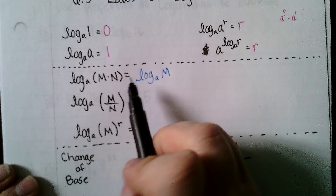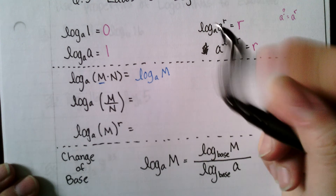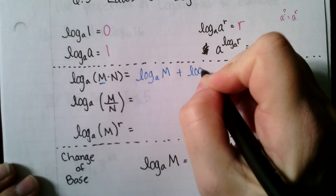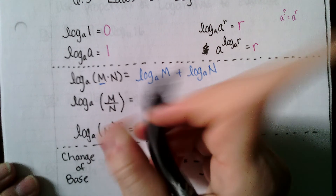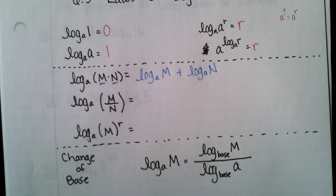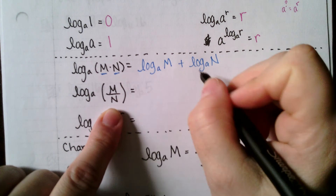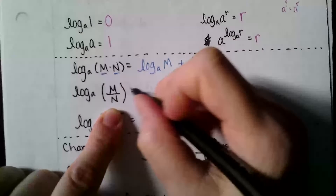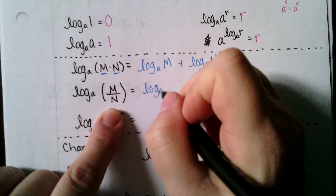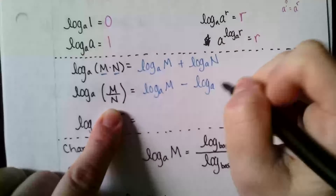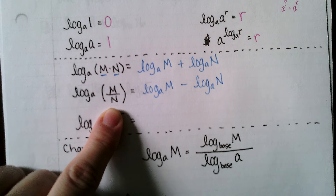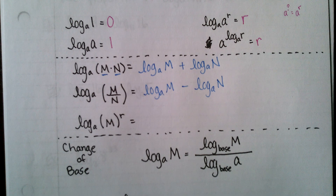So log base a of m·n splits into the sum of two logs: log base a of m plus log base a of n. The quotient property does the same thing except I subtract: log base a of (m/n) equals log base a of m minus log base a of n. When we get into these properties, I'll have an analogy to help apply them to more complicated situations.